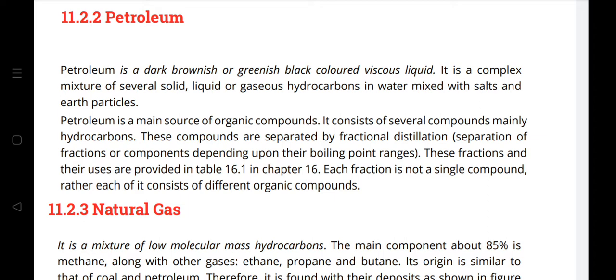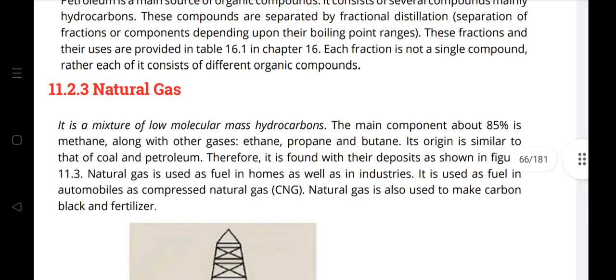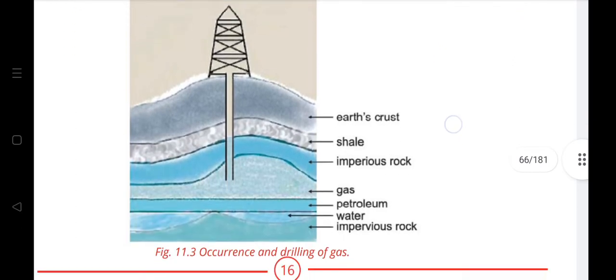Natural gas is a mixture of low molecular mass hydrocarbons. The main component is methane (about 85%), along with ethane, propane, and butane. Its origin is similar to that of coal and petroleum, so it is found with their deposits. Natural gas is used as fuel in homes and industries, and in automobiles as Compressed Natural Gas (CNG). It is also used to make carbon black and fertilizers.